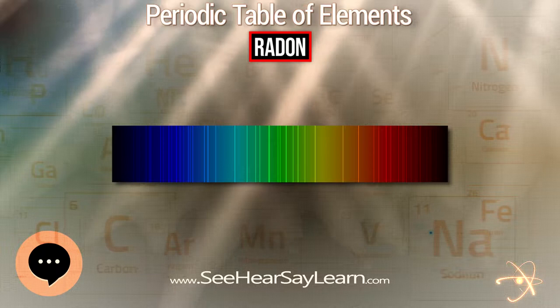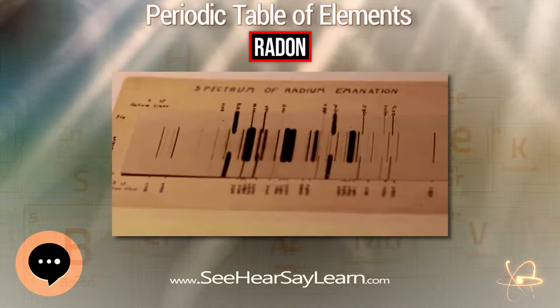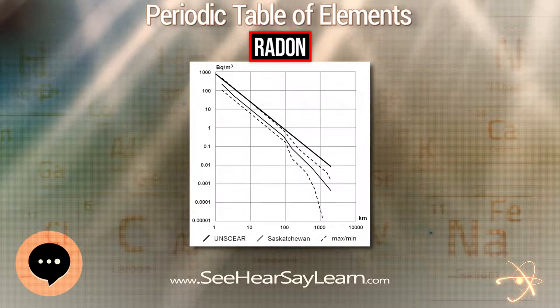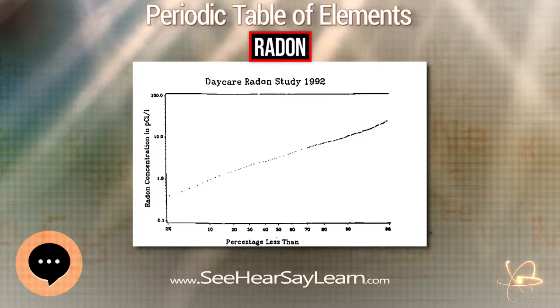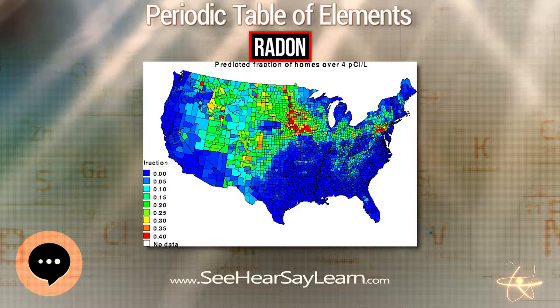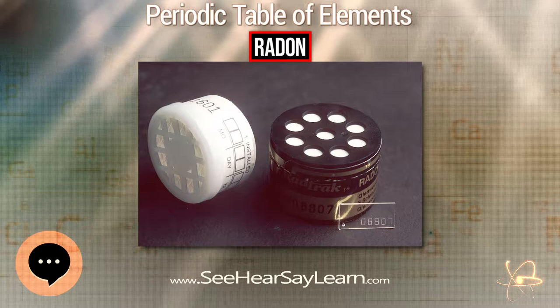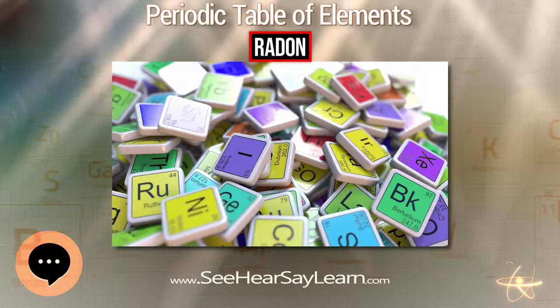The decay of radon produces many other short-lived nuclides known as radon daughters, ending at stable isotopes of lead. Unlike all the other intermediate elements in the aforementioned decay chains, radon is under normal conditions gaseous and easily inhaled. Radon gas is considered a health hazard — it is often the single largest contributor to an individual's background radiation dose, but due to local differences in geology, the level of the radon gas hazard differs from location to location.